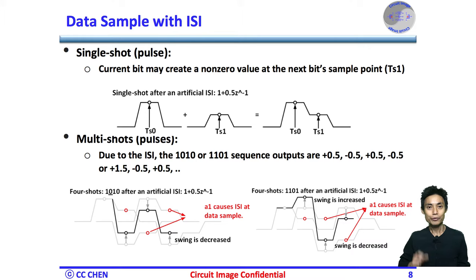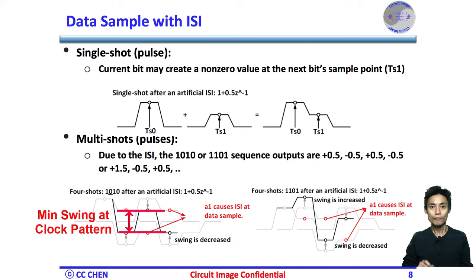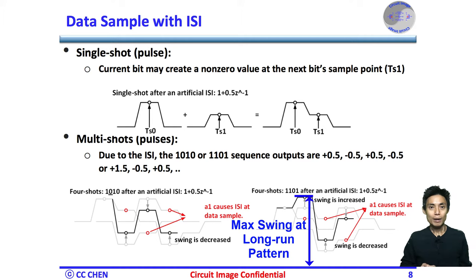However, if the single shot is feeding through a lossy channel with the first post-cursor ISI, the current bit may create a non-zero value at the next bit's sample point Ts1. Due to the ISI, the data sample value of the multi-shot would be minimal for the clock pattern, which is 0.5 in this example. On the other hand, the data sample value of the multi-shot would be maximum for the long-run pattern, and it is 1.5 here.